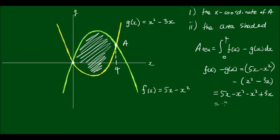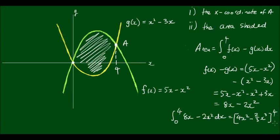which will leave me with 8x minus 2x squared. So the area that I'm looking for is the integral from 0 to 4 of 8x minus 2x squared dx. And this is equal to, so the anti-derivative of this is 4x squared minus 2/3 x cubed, bounded by the upper limit of 4 and the lower limit of 0. And let me continue this over here.